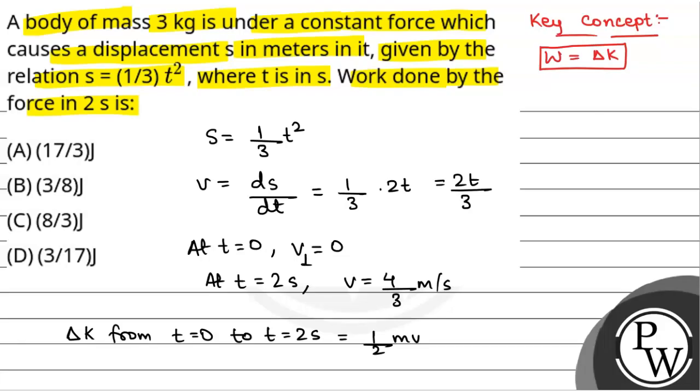Let us call this as V1 and this as V2. So, half m V2 squared minus half m V1 squared, and that will be equal to half into mass is 3 kg into V2 squared is 16 by 9 minus 0. So that will be equal to 8 by 3 Joules is the change in kinetic energy.